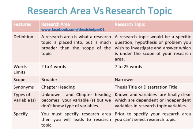The word limit for a research area is usually two to four words, while the word limit for a research topic is usually seven to twenty-five words. The scope of a research area is broader, while the scope of a research topic is narrower.